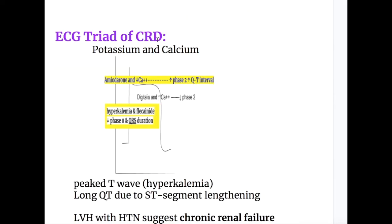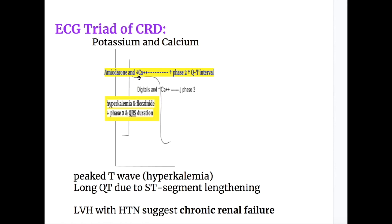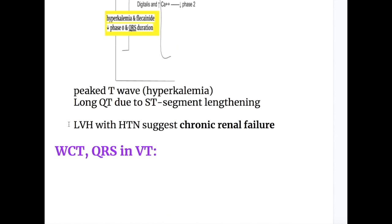The EKG triad of chronic renal disease that may cause irregular wide complex tachycardia involves two electrolytes: potassium and calcium. Chronic renal disease causes hyperkalemia (increased potassium) and hypocalcemia (decreased calcium). Hyperkalemia causes peaked T waves, while hypocalcemia causes increased phase 2 or isoelectric ST segment, prolonging the QT interval. Amiodarone similarly increases phase 2, prolonging the QT interval. Other features include left ventricular hypertrophy (LVH) suggesting chronic renal failure.